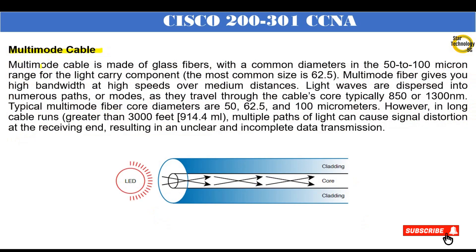Multi-mode cable is made of glass fibers with common diameters in the 50 to 100 micron range for the light-carrying component; the most common size is 62.5 microns. Multi-mode fiber gives high bandwidth at high speeds over medium distances. Light waves are dispersed into numerous paths, or modes, as they travel through the cable's core, typically at 850 or 1300 nm. Typical multi-mode fiber core diameters are 50, 62.5, and 100 micrometers. However, in long cable runs greater than 3000 feet (914.4 m), multiple paths of light can cause signal distortion at the receiving end, resulting in unclear and incomplete data transmission. In multi-mode fiber cable, more than one light wave can be sent at one time.